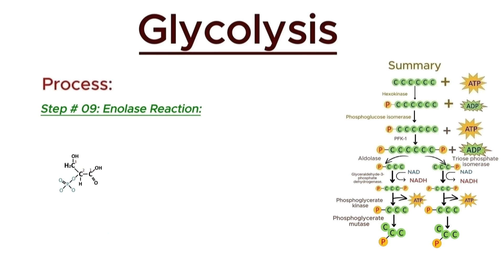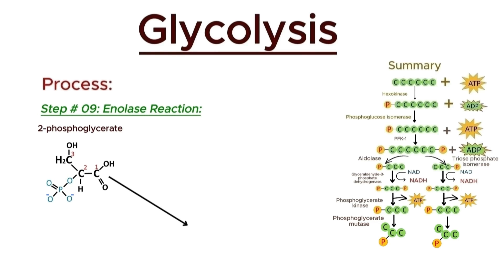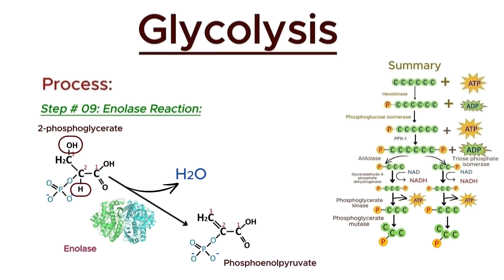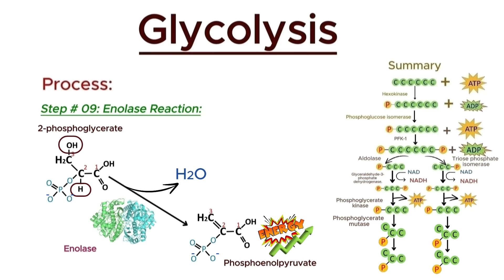In the ninth step of glycolysis, 2-phosphoglycerate is converted into phosphoenolpyruvate (PEP). The enzyme enolase catalyzes this reaction by removing a molecule of water from 2-phosphoglycerate, resulting in the formation of phosphoenolpyruvate. PEP is a high-energy compound with a high phosphoryl transfer potential, which is essential for the next step in glycolysis. In the end, 2-phosphoglycerate is converted into phosphoenolpyruvate through the removal of a water molecule, catalyzed by enolase.